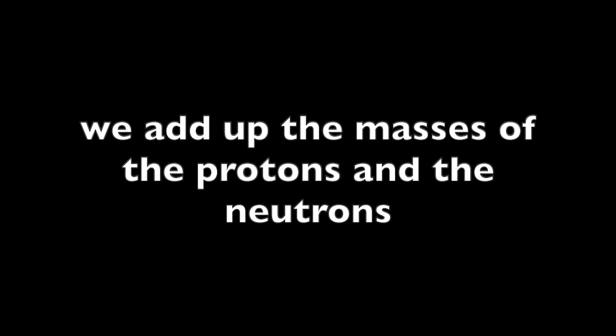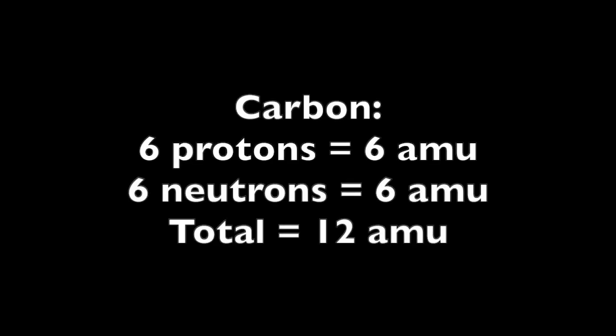The mass of electrons is so small that we can ignore it when we talk about the mass of an atom. If we want to know the atomic mass of a single atom we add up the masses of the protons and the neutrons. For example, to calculate the approximate mass of a carbon atom we add up six protons and six neutrons and get an atomic mass of 12 atomic mass units.